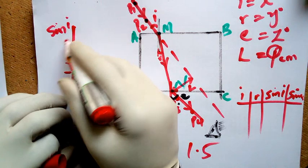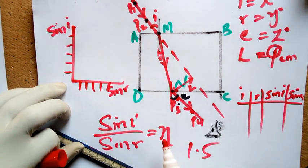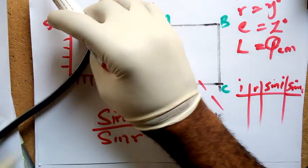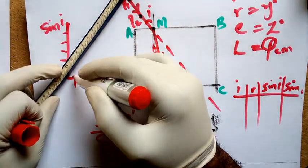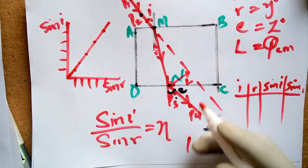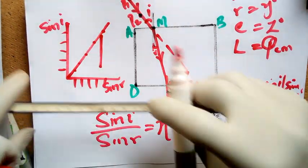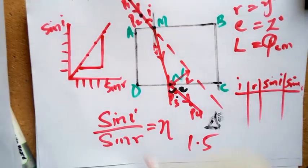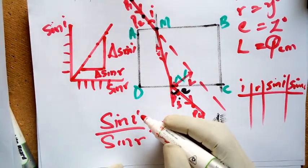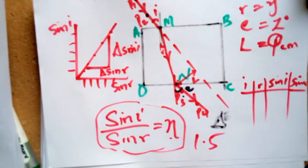Then all the values of sine I, say you carried the experiment five times, and for R the same. Then you'll discover that when you plot this, you will be having a straight line graph. You'll be having a straight line graph such that when you plot the slope, the change in sine I to change in sine R will give you this constant. And at this point you have verified Snell's law, which is the second law of refraction.